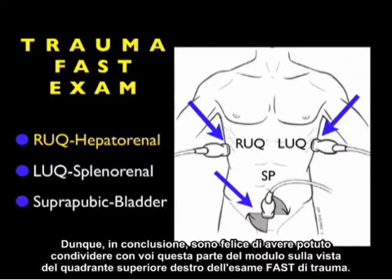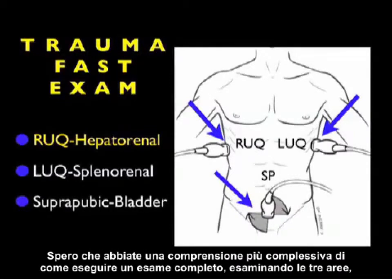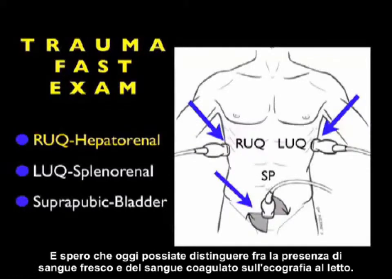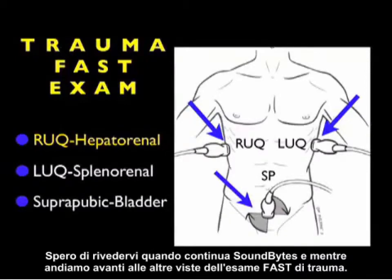In conclusion, I'm glad I could share this Part 2 module on the Right Upper Quadrant View of the Trauma Fast Exam. I hope you now have a better understanding of how to perform a complete exam looking at the three areas we discussed: infradiaphragmatic, Morrison's pouch, and the inferior tip of the liver. Hopefully you'll now be able to discern fresh blood versus clotted blood on bedside sonography. I hope to see you back as we continue through the other views of the Trauma Fast Exam.